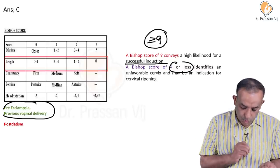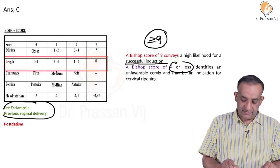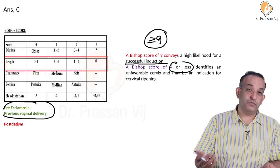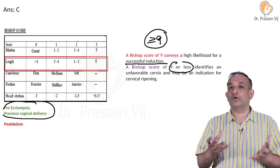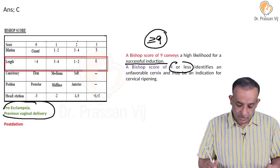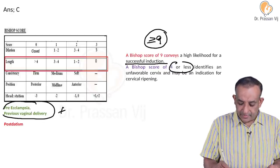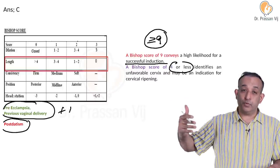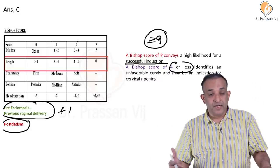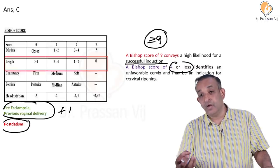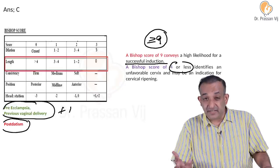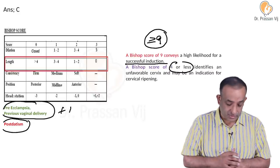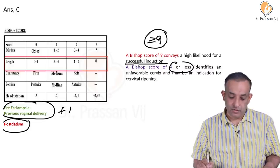In preeclampsia you must deliver the woman, and previous vaginal delivery proves the cervix will open up - so we add a point for these in the Bishop's score. If it is post-dates (beyond 40 weeks) and the cervix is not opening, we subtract a point. Remember the key cutoffs: 4 and less is a poor cervix requiring cervical ripening before induction; 9 and more is a good score. These two you must remember for exams.